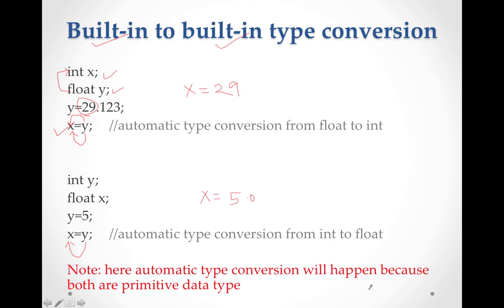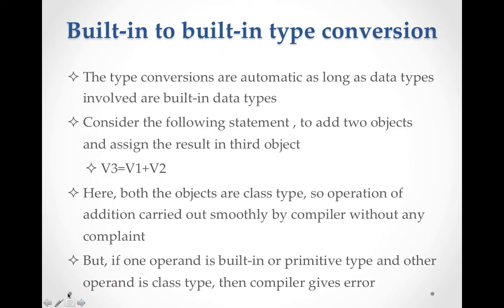The important note is that automatic type conversions happen because both are primitive built-in data types. We have to learn three types of data types: built-in, user-defined, and derived. When both operands are built-in, the conversion is simple and the compiler handles it. But when you want to add two objects and assign the result to a third object, here both objects are class type.